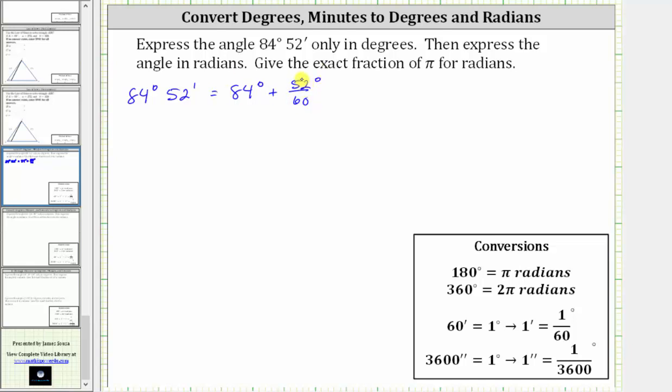Now let's simplify the fraction 52/60ths. The greatest common factor between 52 and 60 is four, and therefore to simplify, we divide the numerator and denominator by four. 52 divided by four is equal to 13, 60 divided by four is equal to 15, and therefore we can write this as 84 degrees plus 13/15ths of a degree, which is equal to 84 and 13/15ths degrees.